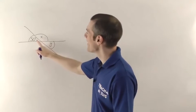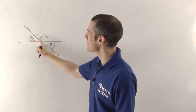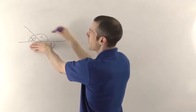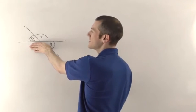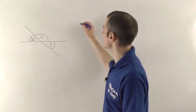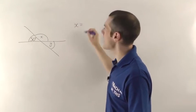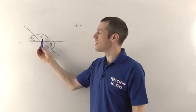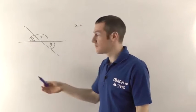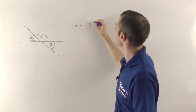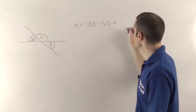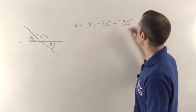First things first, this 50 plus X — you'll notice they sit on a straight line, there's a straight line that goes along there, which means those two must add up to 180 degrees. Angles on a straight line always add up to 180 degrees, which means X is going to be 180 minus 50, giving us 130 degrees.